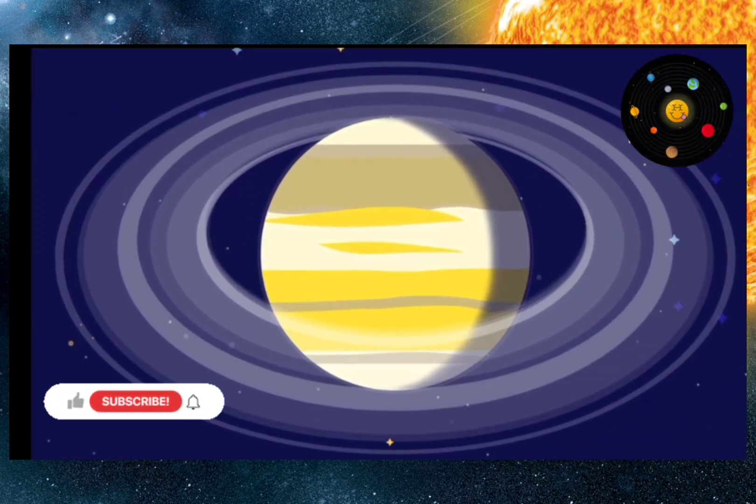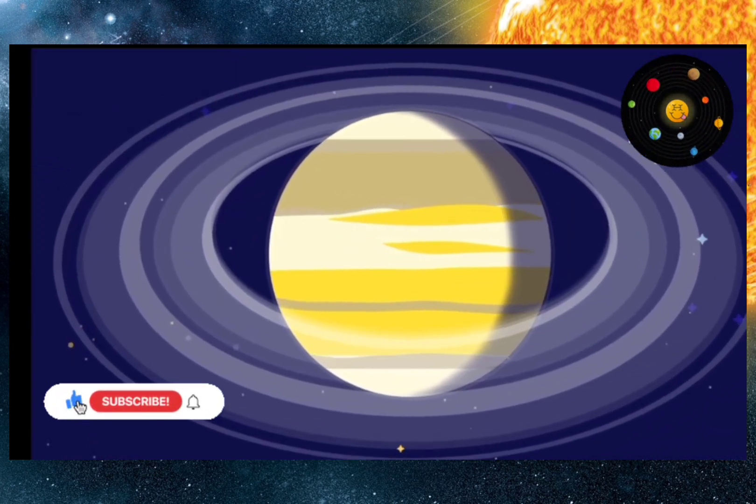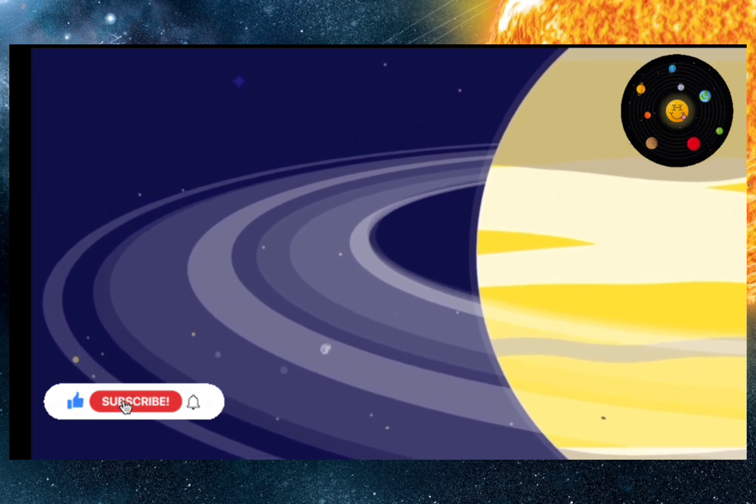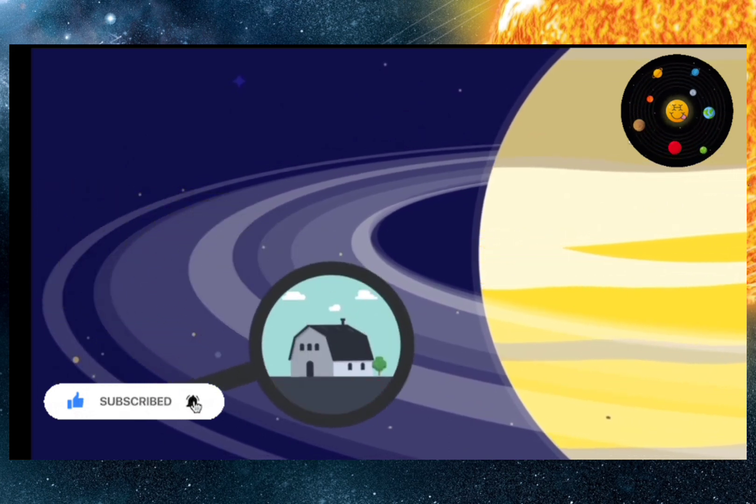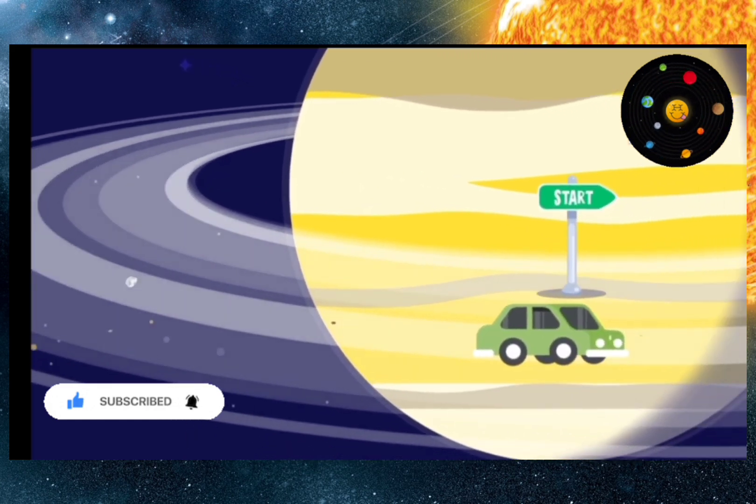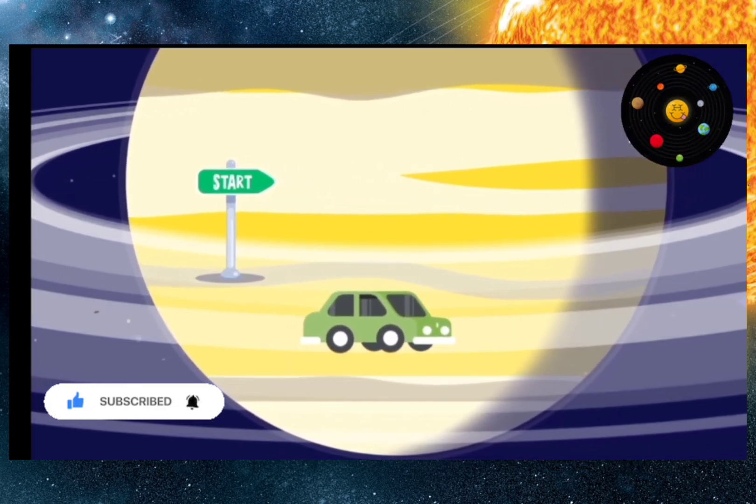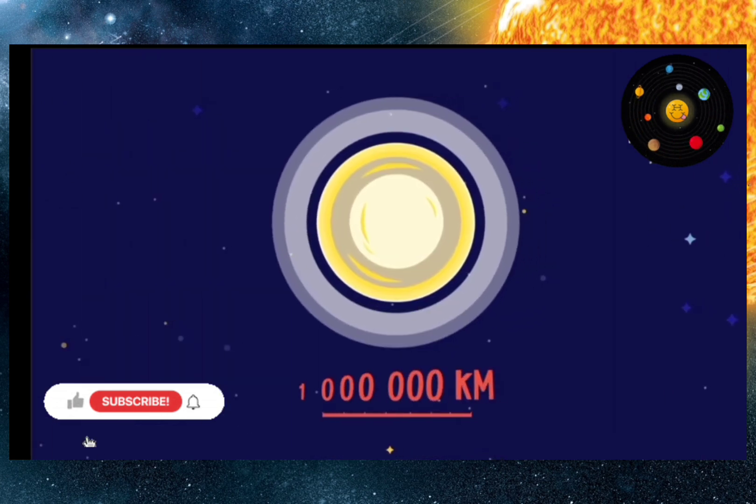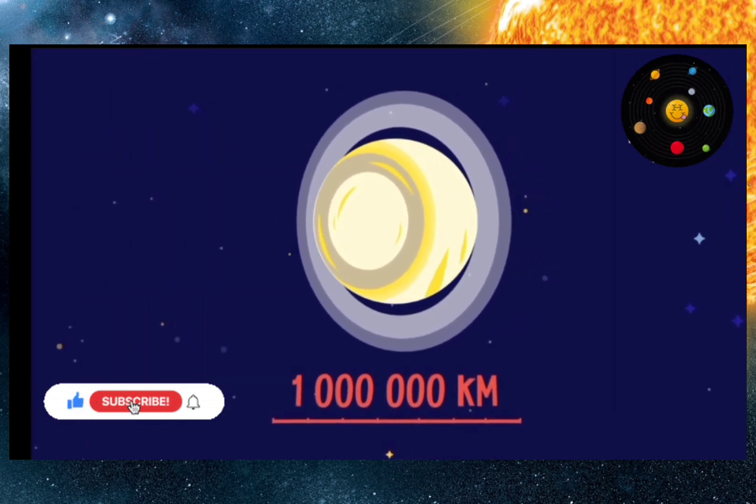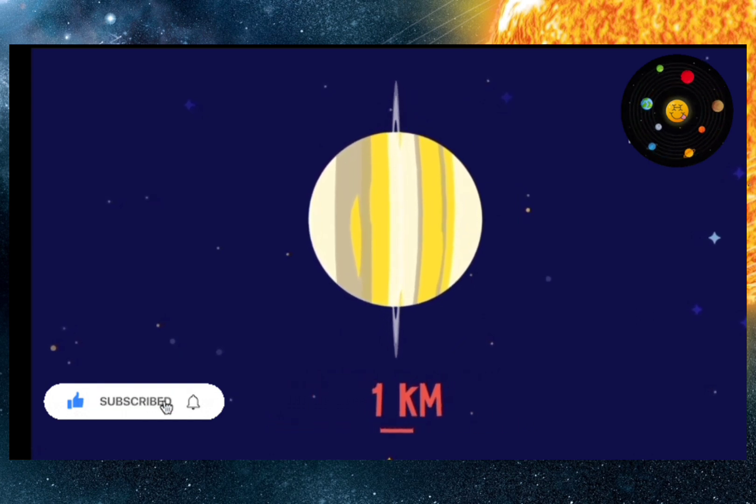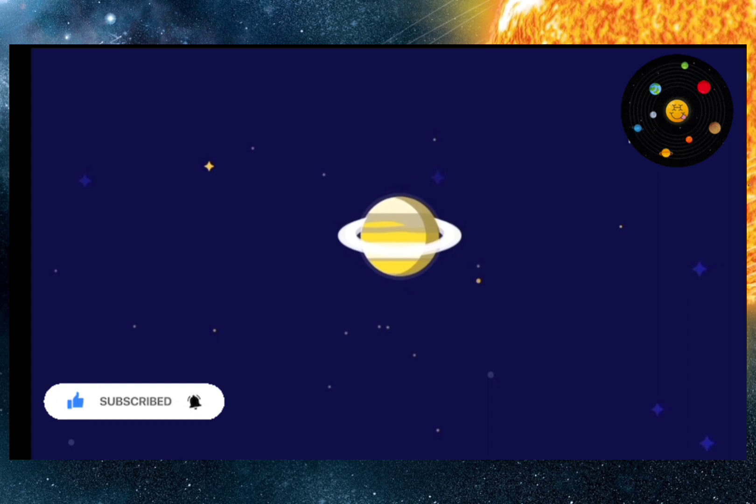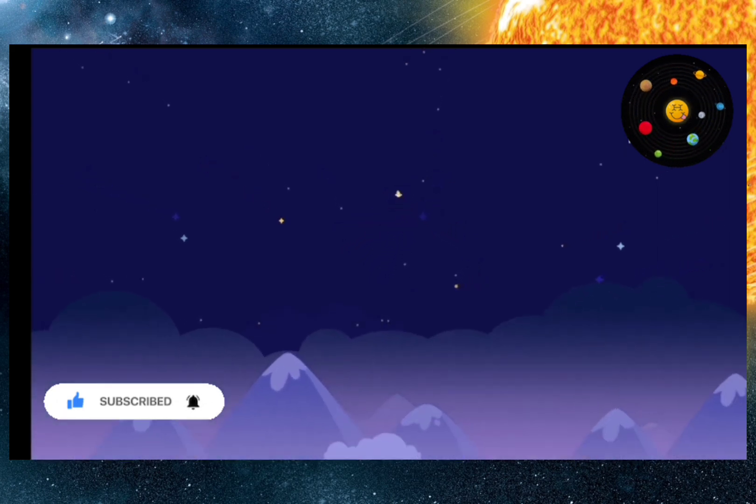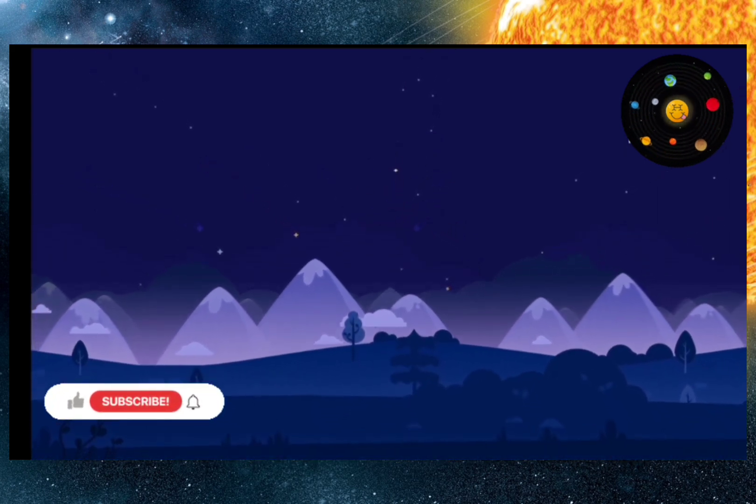Saturn is famous for its rings, which consist of a large number of ice particles, ranging in size from specks of dust to a three-story house. To ride along one of the rings in a car, we would need a long journey over a year. At the same time, the rings are so thin, that if we were on the equator of Saturn, we would not even notice them. Saturn, also known as Lord of the Rings, is the farthest planet that can be seen with the naked eye.